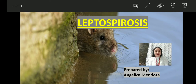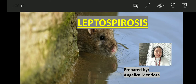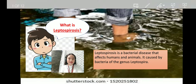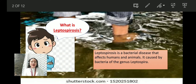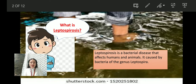Now let us start off by decoding first the meaning of leptospirosis. What is leptospirosis? According to Wikipedia, leptospirosis is a bacterial disease that affects humans and animals. It is caused by bacteria of the genus Leptospira.